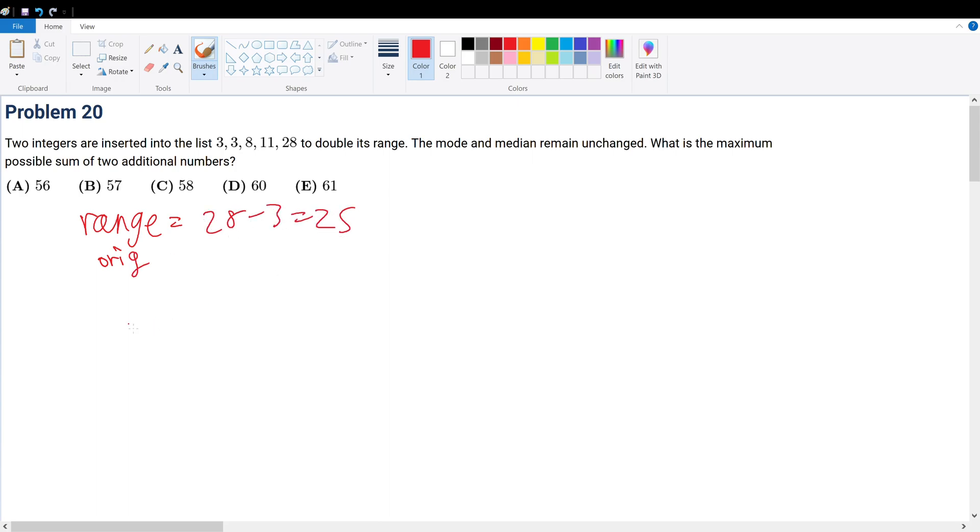So the range for the original series must be equal to 28 minus 3 is equal to 25. So then we double it, so the range of the new one must give you 50, because 25 times 2. So that must mean that if the smallest term here was 3, then we know that the new range will have to be calculated by the new term y minus 3 to give 50. So that y must be equal to 53.